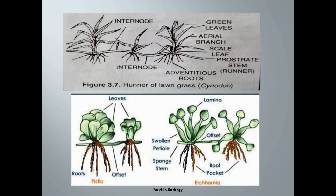The difference between runners and offset: the runner is terrestrial while the offset is aquatic. The connecting branch in case of runners is long and with multiple nodes and internodes, while in case of offset it is soft, swollen, and one internode long. The branches in case of runner arise normally in one direction, while in case of offset the branches arise in all directions.